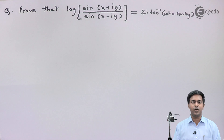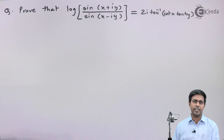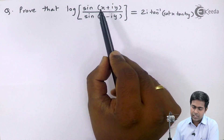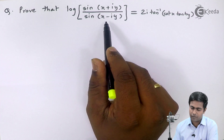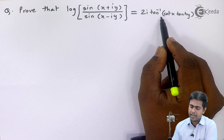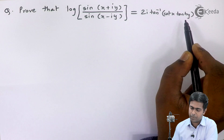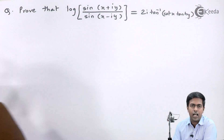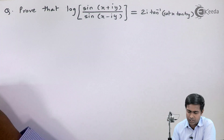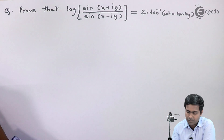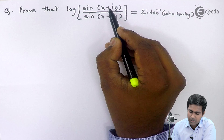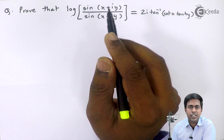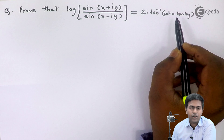Hi friends. In this video we are going to see a problem based on the logarithm of a complex number. The problem is: prove that log of sin(x+iy) / sin(x-iy) is equal to 2i tan inverse of cot x into hyperbolic tan y. To prove this, we will find sin(x+iy), then sin(x-iy), then find the log and prove the result.